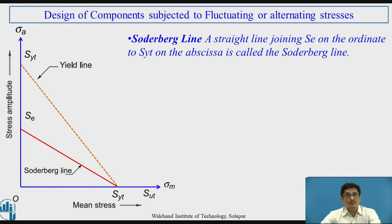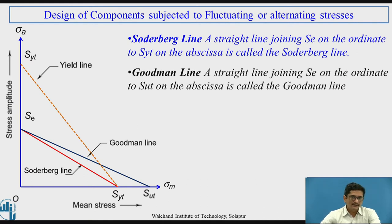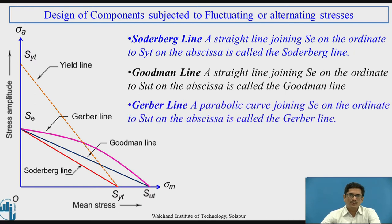Joining SE to SUT gives a line called the Goodman line — a straight line which joins SE on the ordinate to SUT on the abscissa. Additionally, a parabolic curve joining SE on the ordinate to SUT on the abscissa is called the Gerber line.